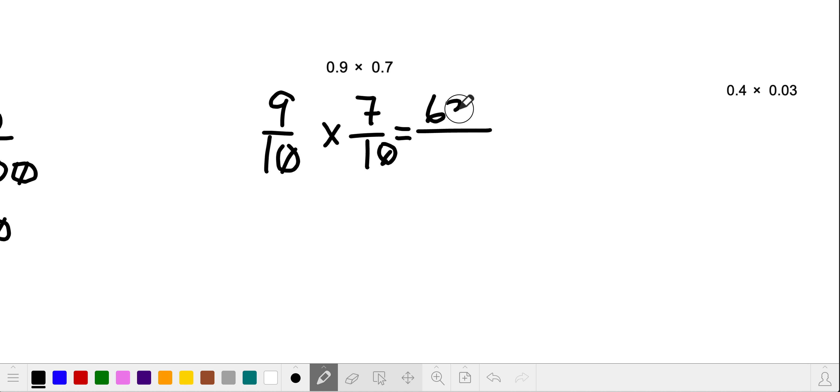multiply straight across, you get 63 for the numerator, and then 100 again for the denominator. And so we would read this as 63 hundredths. So you could write it as a fraction like that, or you can write it as a decimal like so. So 63 hundredths.